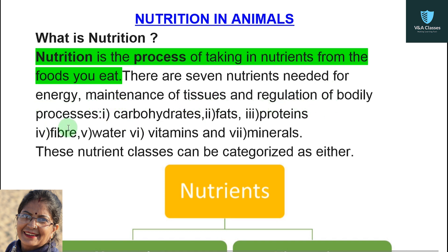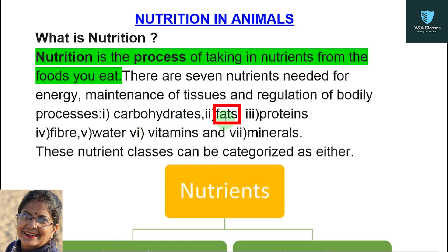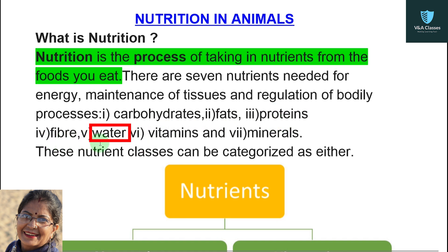There are seven nutrients needed for energy, maintenance of tissues, and regulation of bodily processes. The seven nutrients are: first, carbohydrates; second, fats; third, proteins; fourth, fiber; fifth, water; sixth, vitamins; and seventh, minerals.